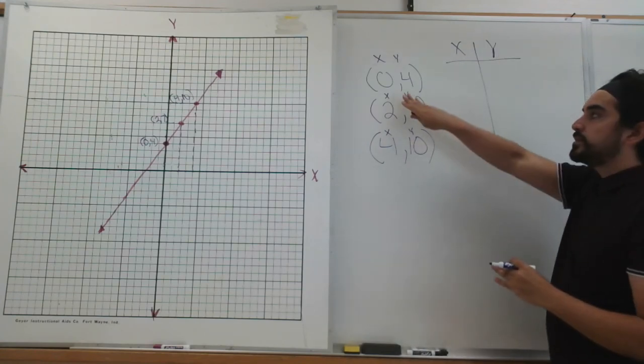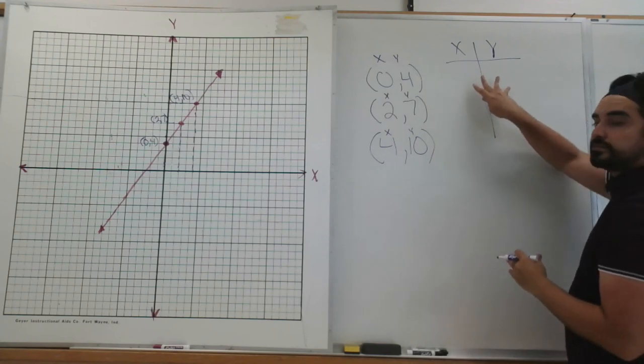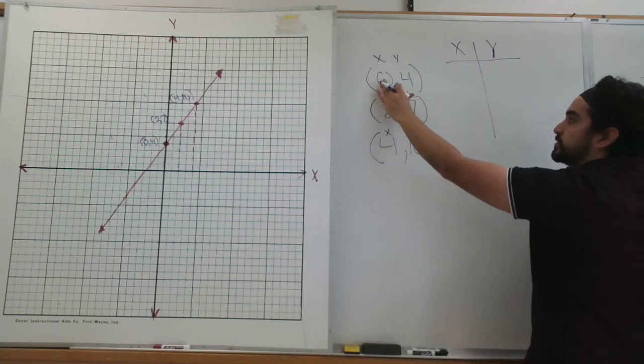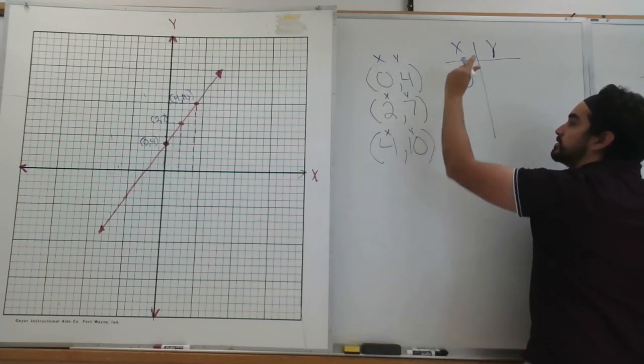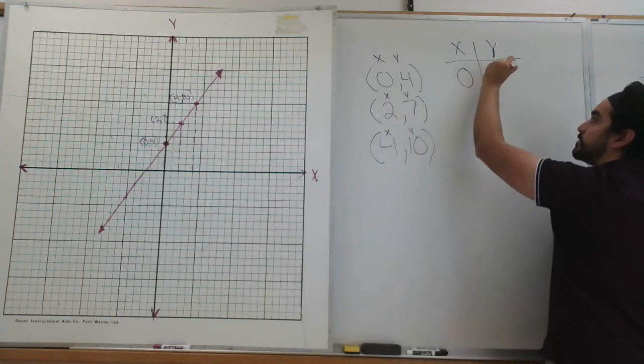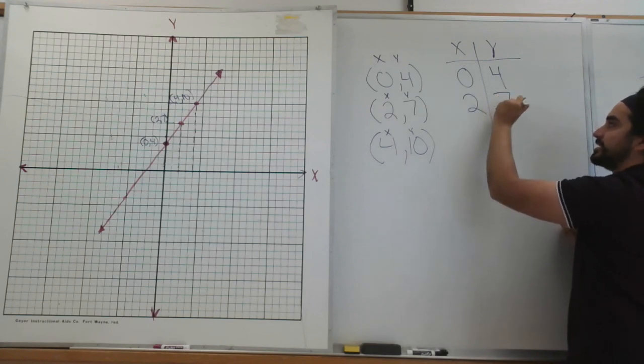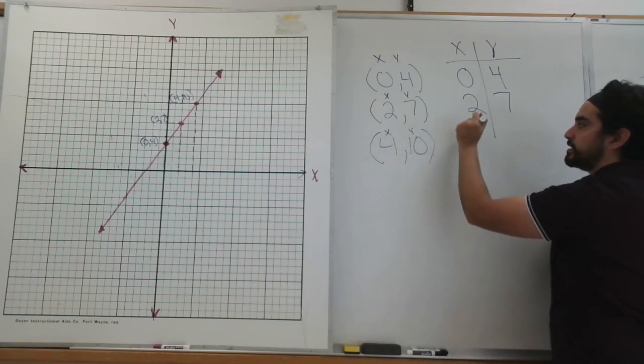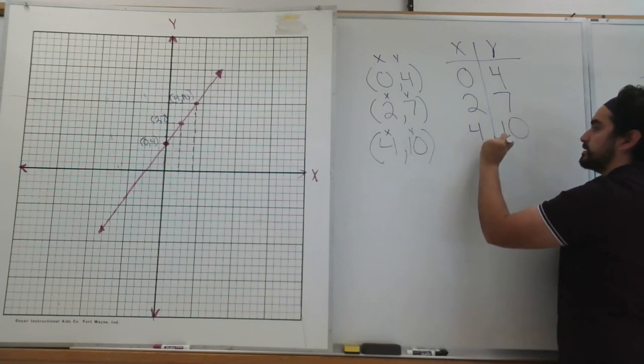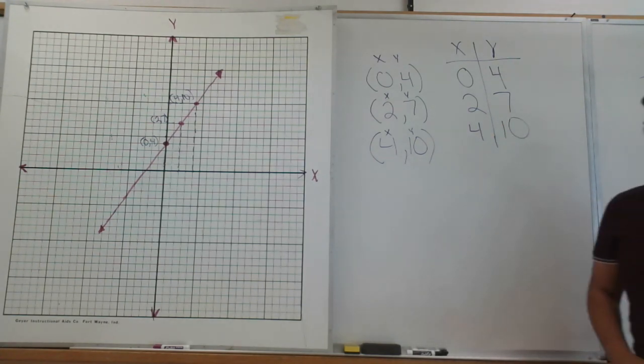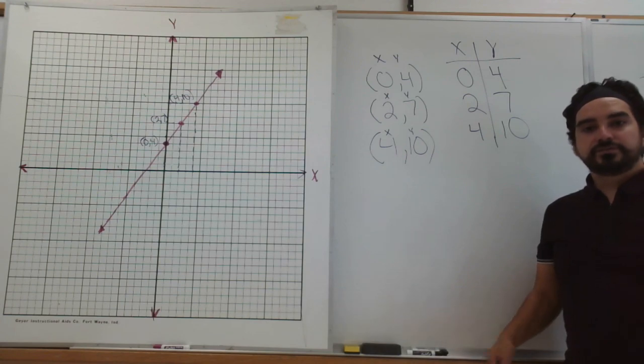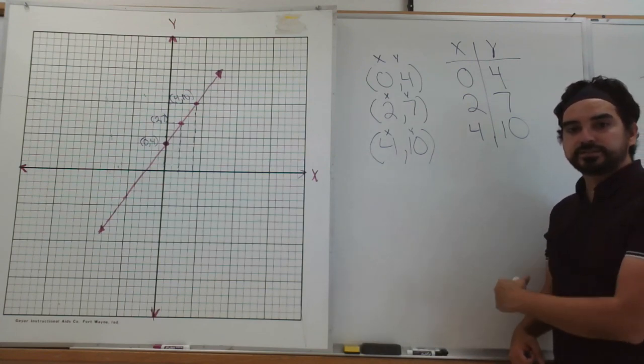And all we're going to do is copy our coordinate pairs into the table. So the first one is x is 0, y is 4, x is 2, y is 7, x is 4, y is 10. And that is how you input coordinate pairs into a table.